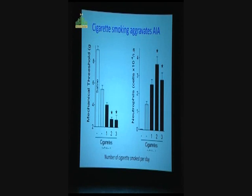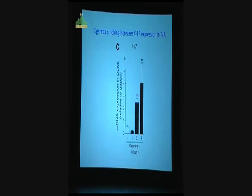If you look at neutrophil infiltration in the joint, you can see that the neutrophil infiltration is increased in a dose-dependent manner, depending on the amount of cigarette you take. Is there any relationship with IL-17? It looks like the cigarette smoking increased the message of IL-17 in the lymph node of the mice given cigarette smoking.